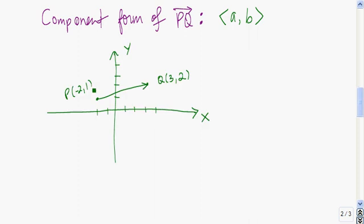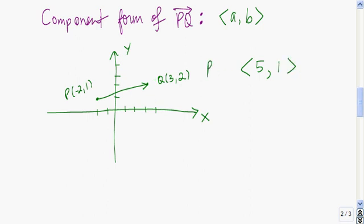Here I have vector PQ with a tail at (-2, 1) and a head at (3, 2). To get the x-component, I figure out how much I need to add to -2 to get to 3 — that's 5 units in the positive x-direction, so the x-component is 5. P has a y-coordinate of 1 and Q has a y-coordinate of 2, so we go up one unit in the y-direction. The vector PQ in component form is ⟨5, 1⟩.